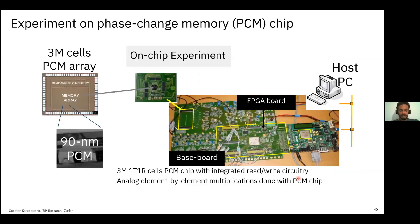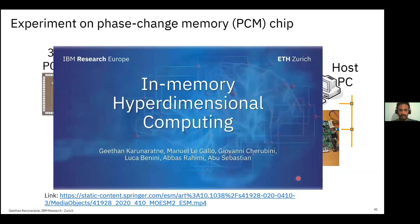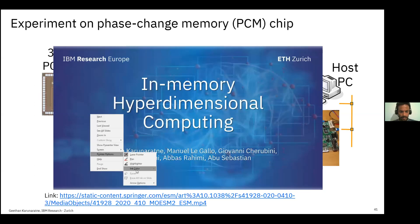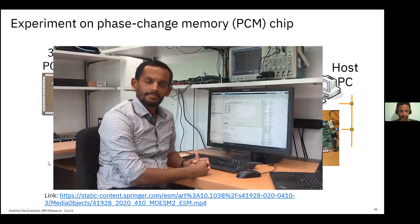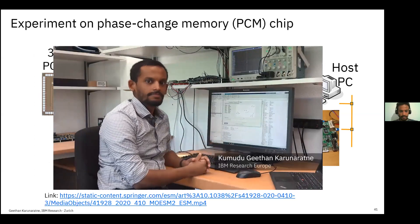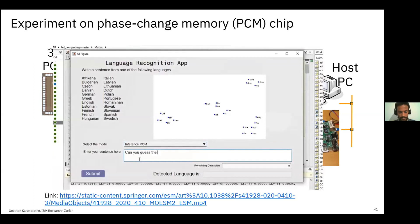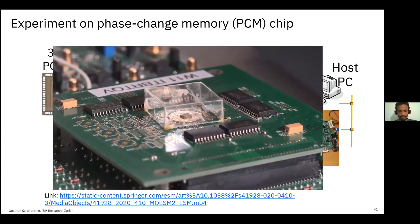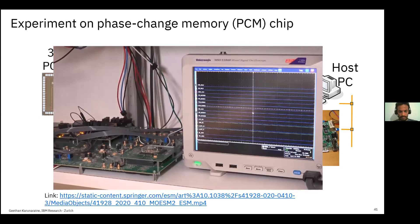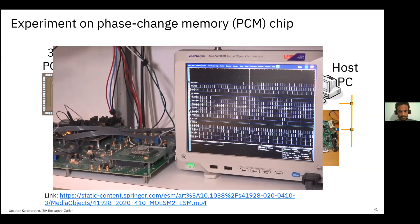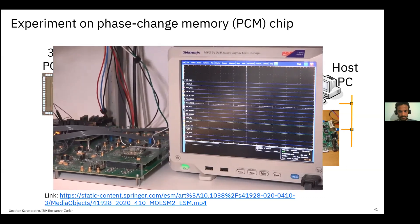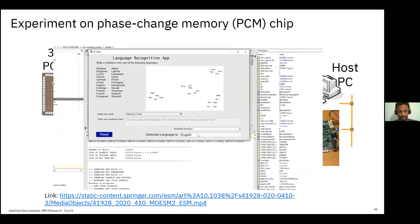This is the prototype experimental chip used in this work. A demonstration video shows a language recognition application based on the experimental PCM platform. We use hyperdimensional computing to determine the language of a query sentence written in the Latin alphabet. After entering the query sentence, a part of the PCM array reprogrammed with letter hypervectors computes a query hypervector, which is compared against 22 European language profile hypervectors stored in another part of the PCM array, and the best-matching language is returned and displayed on screen.